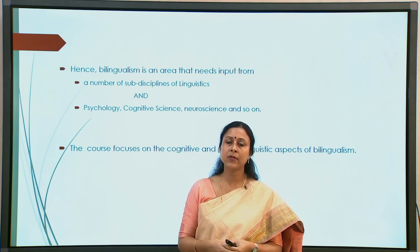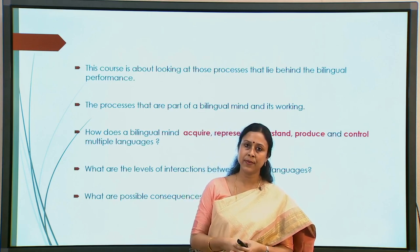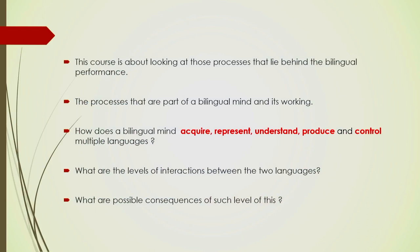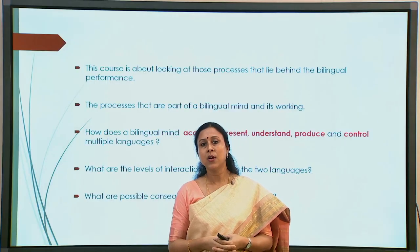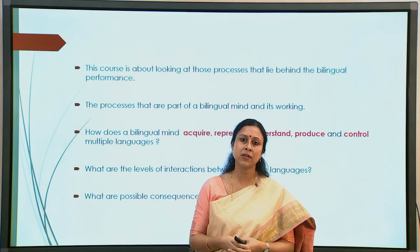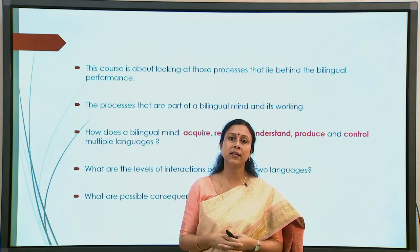We will focus primarily on the cognitive and psycholinguistic aspects. What do we mean by cognitive and psycholinguistic aspects of bilingualism? This is a gamut of processes — a whole range of processes that lie behind the bilingual speaker's performance — in terms of both comprehension as well as production of the two languages. The processes that are an integral part of a bilingual mind and its working. How does the bilingual mind work? What are the mental processes? When we talk about the psycholinguistic aspect of bilingualism, we are primarily interested in the mental processes that are behind the linguistic outcome.